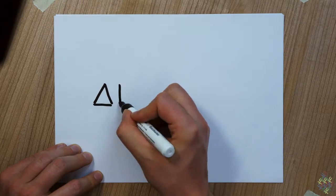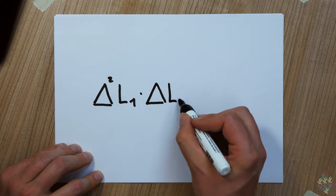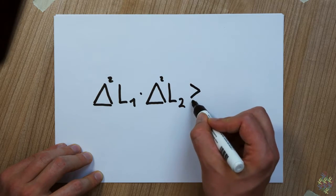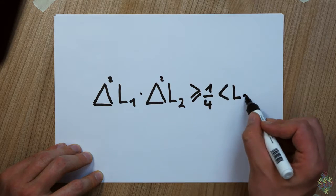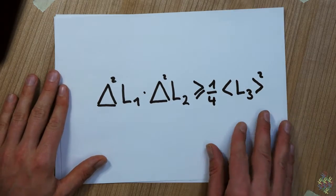When you look up our title in the index of a quantum mechanics textbook, what you will most likely find is this relation for the variances of two angular momentum components due to Robertson. So why are we not happy with this textbook material?